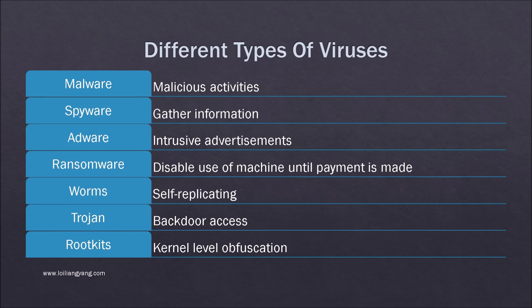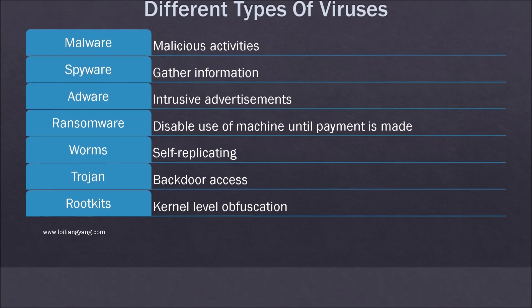A rootkit is a type of software designed to hide the fact that an operating system has been compromised, sometimes by replacing vital executables. Rootkits allow viruses and malware to hide in plain sight by disguising as necessary files that the antivirus software will overlook.